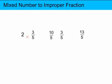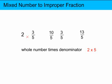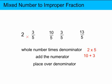So I'll just go over those steps one more time. Take the whole number and multiply it by the denominator. In this case, 2 times 5 is 10. Then add the numerator — in this case, 3. 10 plus 3 is 13. And place that value over the denominator 5. So here we'll have 13 fifths.